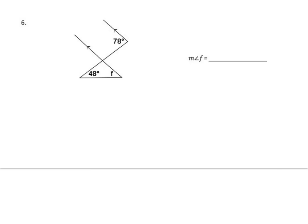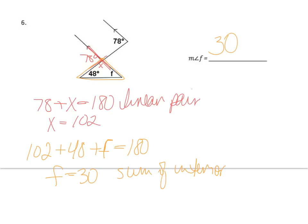It looks like I have parallel lines, so I can use the corresponding angles rules from the previous lesson. This one was a little bit easier: I knew the 78 degrees is a corresponding angle, then I used a linear pair with a vertex I labeled x, and then I solved the triangle.